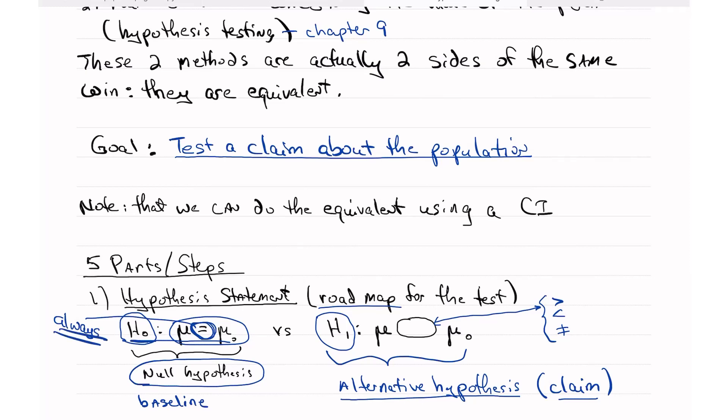It's never an equal sign in the alternative. In fact, it could be either a greater than, a less than, or this symbol, which is an equal sign with a line through it. And this is not equal. So we can say that mu is greater than some value mu naught, mu is less than some value mu naught, or mu is not equal to some value mu naught.